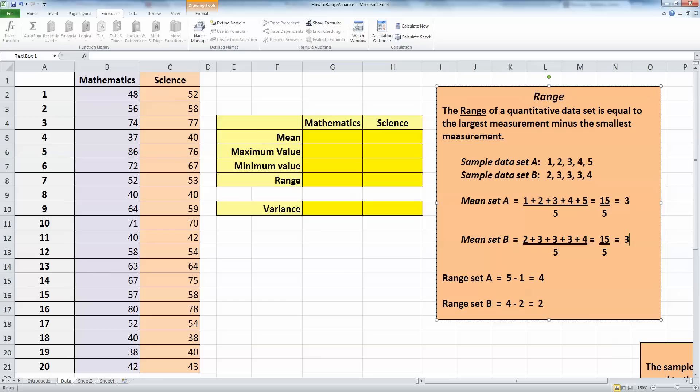So when I look at range of data set A, I can see that the highest value is 5 and the lowest value is 1. So subtract one from the other, 5 minus 1 gives us a range for set A of a value of 4.